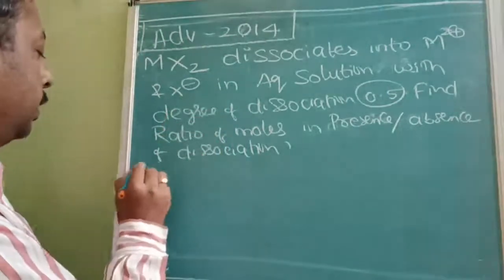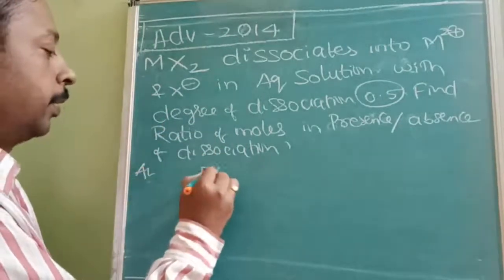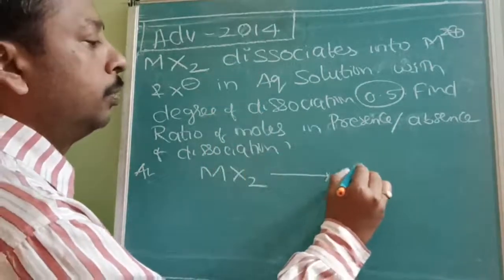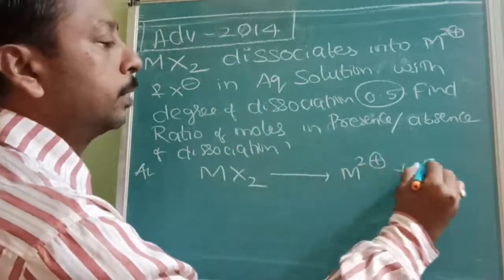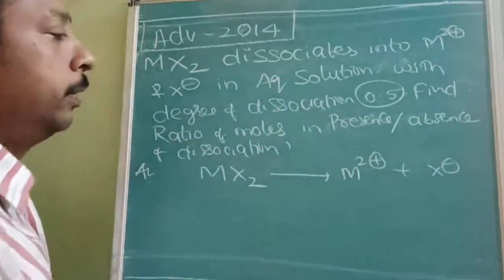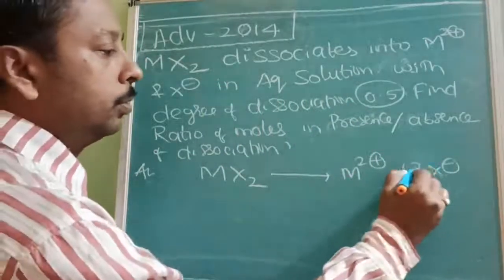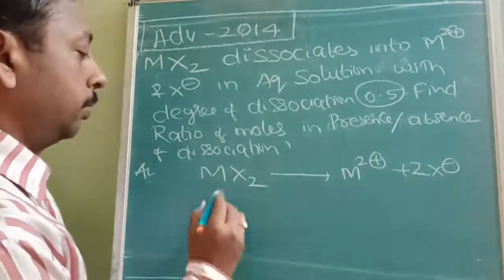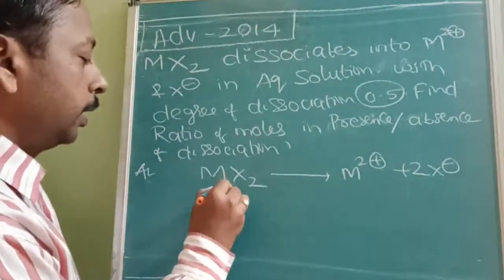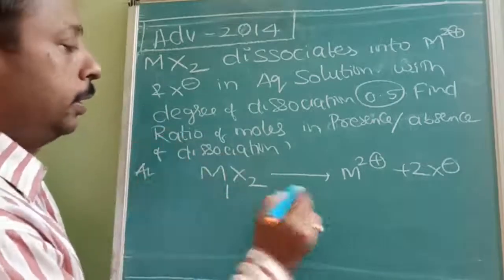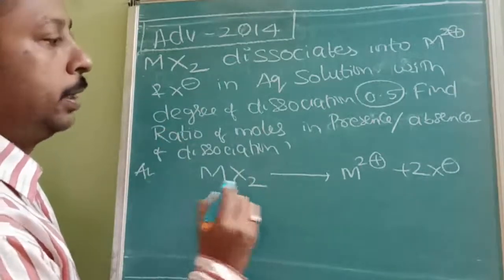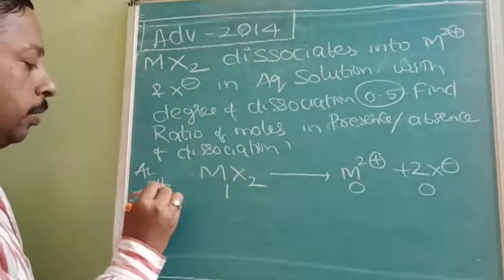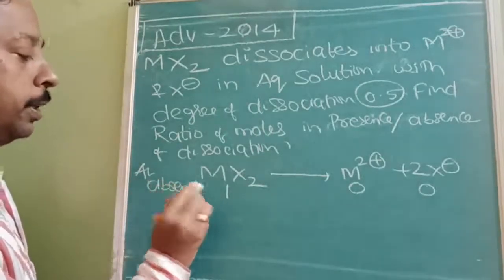So let us take the answer here. MX2 dissociates giving M²⁺ plus 2X⁻. Now there are two X, so that should be divided into two parts. Let us take initial moles as 1. In absence of dissociation it is 1, 0, and 0 — this is when there is no dissociation.